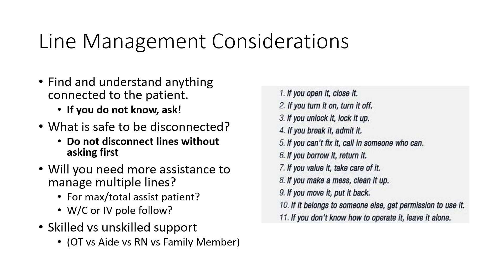For line management, understand everything connected to the patient and work toward the side with the most critical or most total lines. If you don't know what a line is or does — ask. Don't go in cavalierly disconnecting things or moving things around. These patients are in a hospital for a reason. Ask what's safe — some things may be safe to disconnect temporarily, like an IV line running just saline, but you have to ask the nurse first. Also figure out how much assistance you might need to manage multiple lines. If they've got six, seven, or eight lines, you may need another person — an OT, a PT aide, a nurse, or even a family member for non-critical lines.